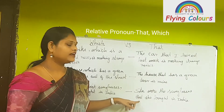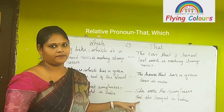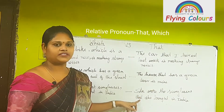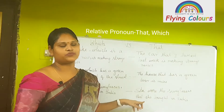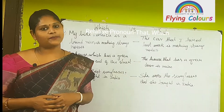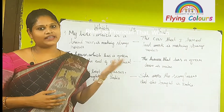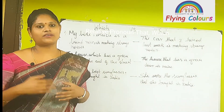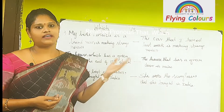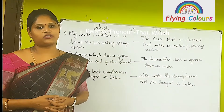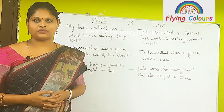'Sita wore the sunglasses that she bought in India.' In this case, the particular sunglasses were bought by Sita from India. When we talk about particular things, we use 'that' as a relative pronoun. To summarize: 'which' introduces a non-essential clause and comes with commas; 'that' introduces an essential clause and does not use punctuation marks. Both 'which' and 'that' are relative pronouns. Thank you.